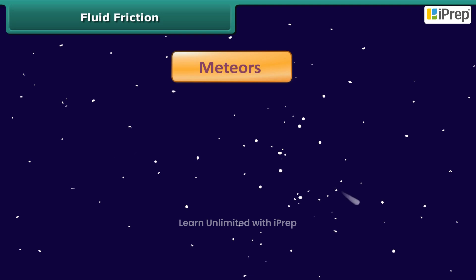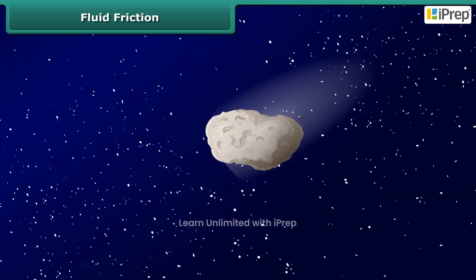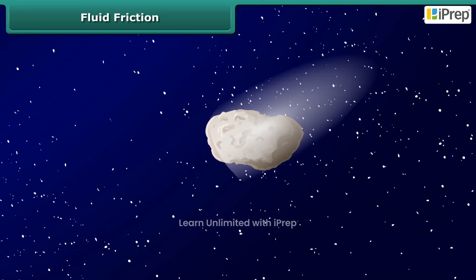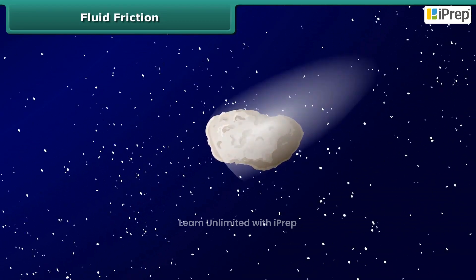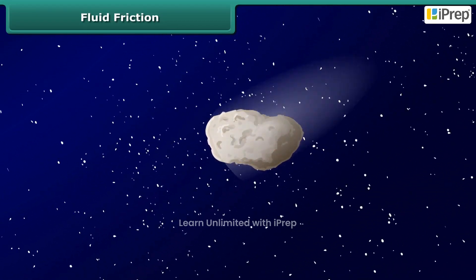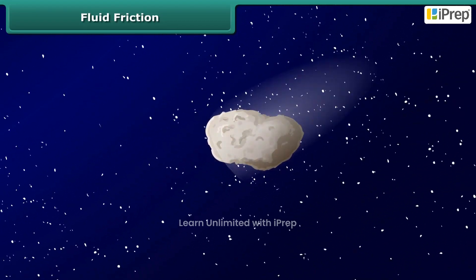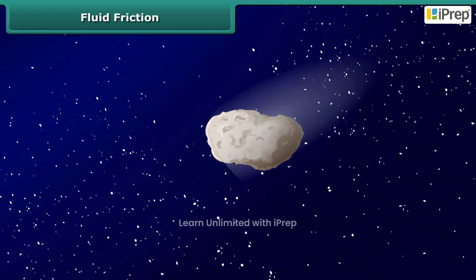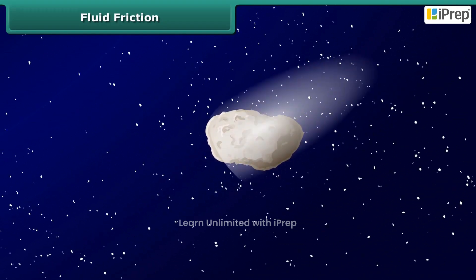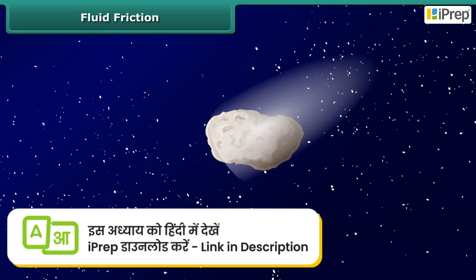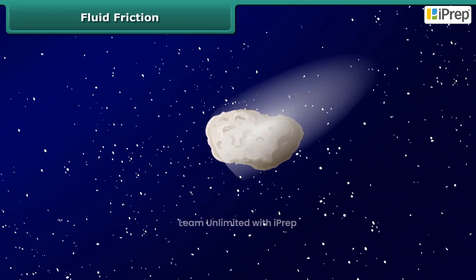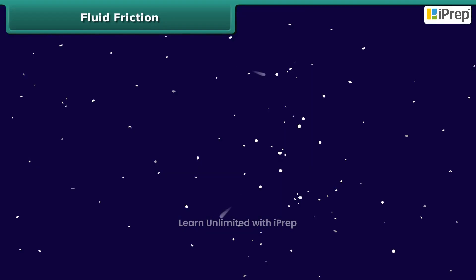Do you know why it catches fire? When a meteor enters from space into the Earth's atmosphere, it rubs against the air. The speed of the meteor is extremely high, hence it comes across a very high friction while moving through air. This generates heat and burns with a flame. The burning meteor leaves behind a trail which appears like a shooting star.